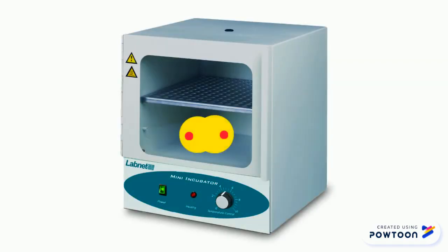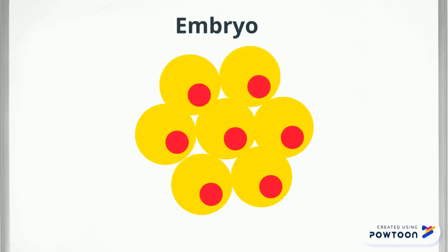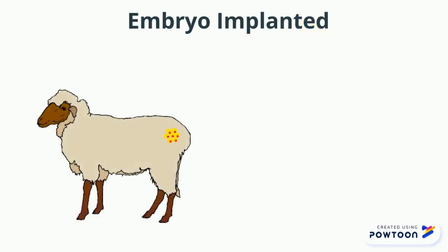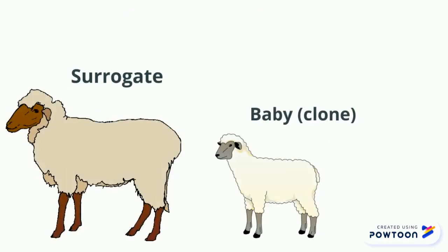The egg is incubated in uterine-like conditions, meaning kept in high humidity at 37 degrees Celsius. Once the cell has started to form an embryo by making cell duplicates to carry out different functions, the embryo is placed inside a surrogate mother who carries the developing embryo like a normal pregnancy. When the baby is born, it will be a clone of the animal the somatic cell was taken from.